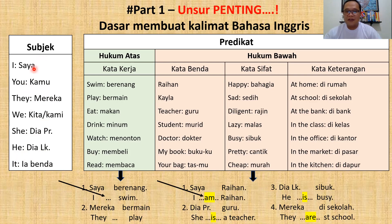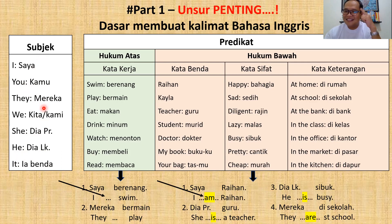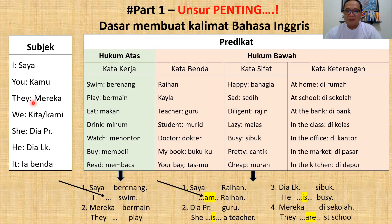Bagaimana kita ingin bicara Bahasa Inggris kalau kata pertama saja tidak hafal? Contohnya, ingin bicara 'mereka' tapi Anda masih berpikir mereka itu apa Bahasa Inggrisnya. Bagi yang sudah hafal, saya ucapkan jempol. Awal mula kita membuat kalimat, harus tahu: saya itu I, kamu itu you, mereka itu they, kita/kami itu we, dia perempuan itu she, dia laki-laki itu he, itu benda itu it. Ini harus hafal.